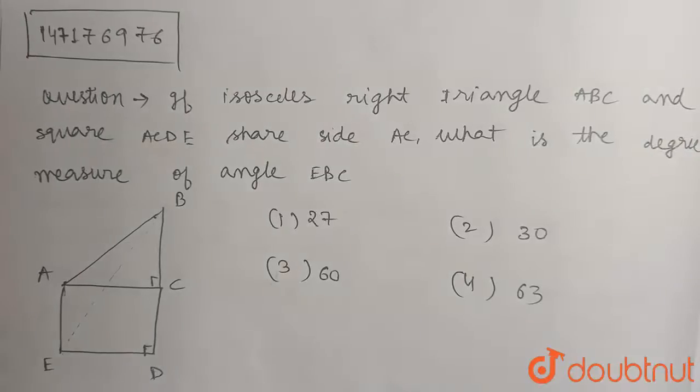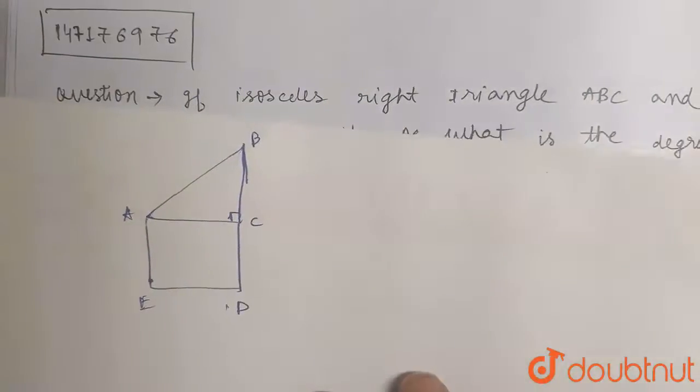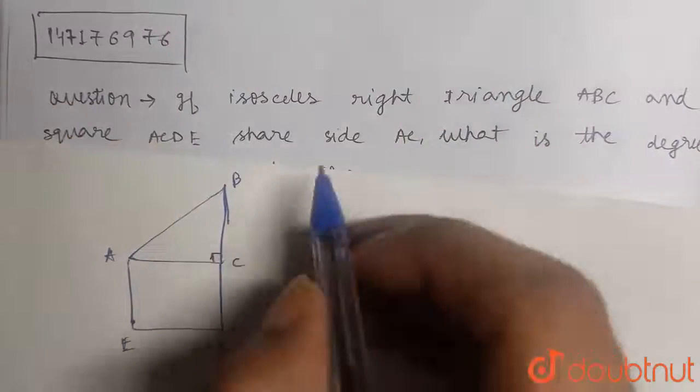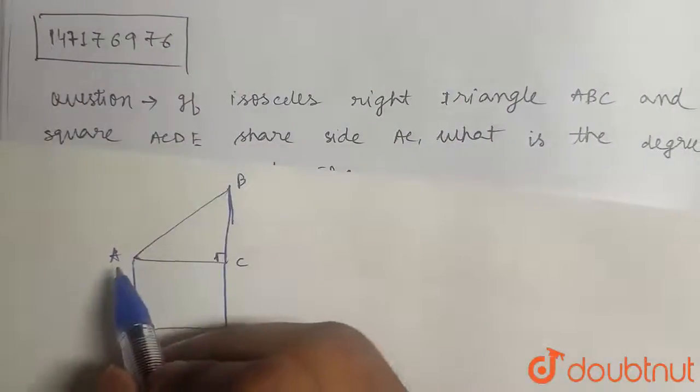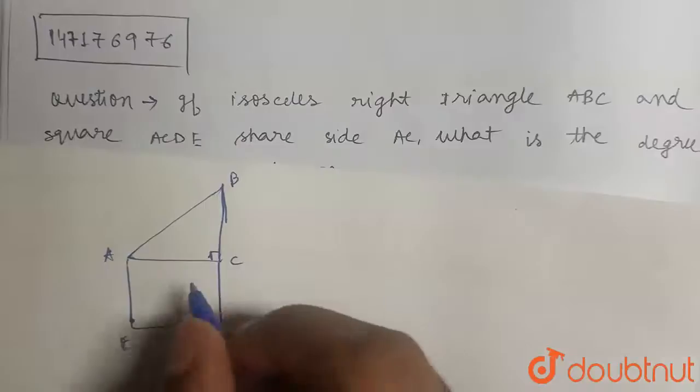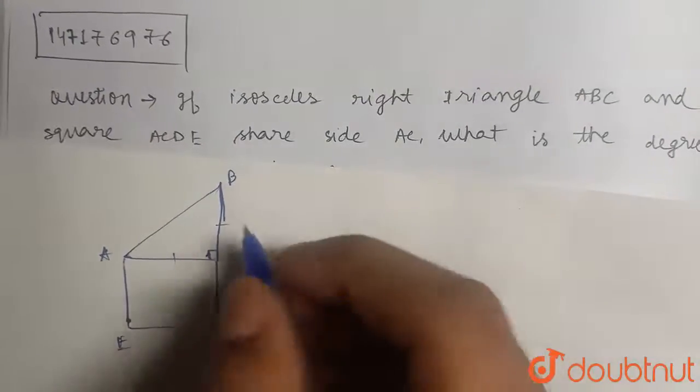Now see how we are going to do this. This is an identical diagram. Now since ABC is a right angle isosceles triangle, we are assuming these two sides are must be equal and this is the angle of 90 degrees.